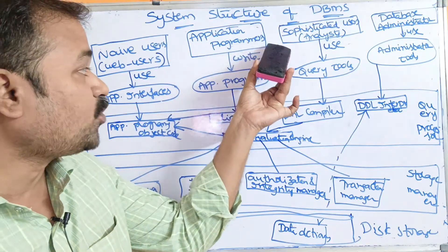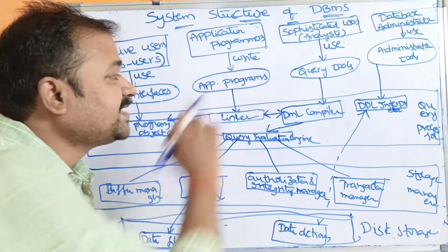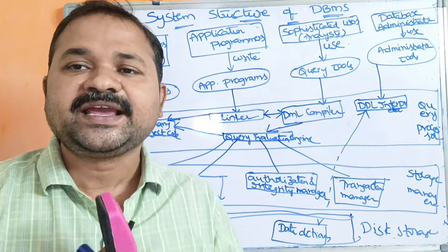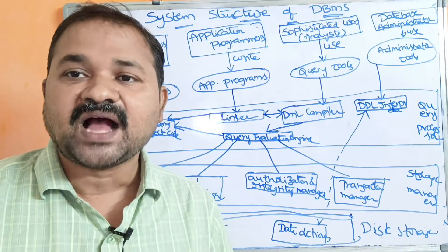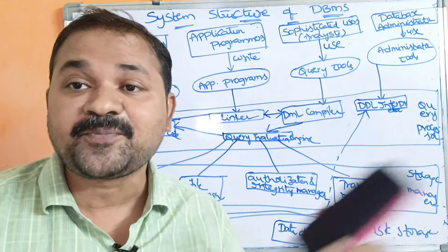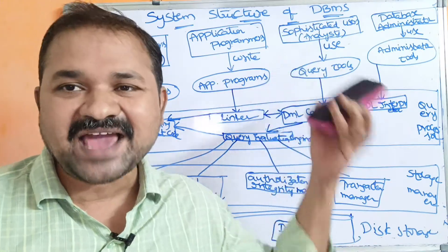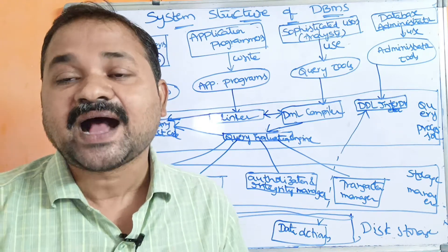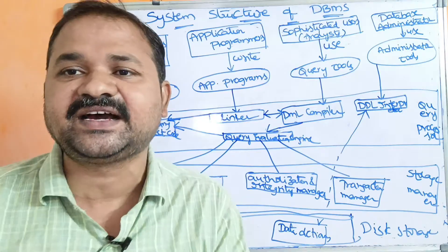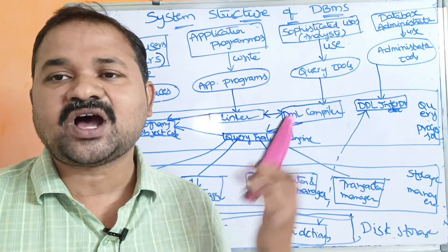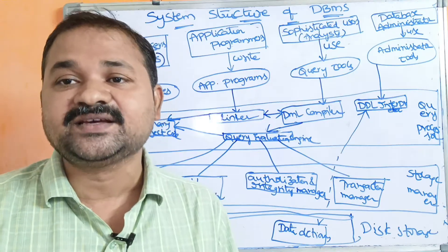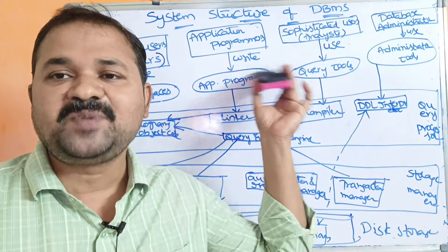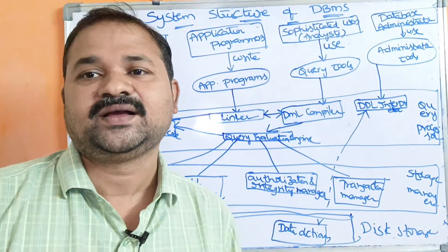Now let us see about application programmers. Application programmers write application programs in order to interact with the database. Application programmers are nothing but software employees. They use languages such as C, C++, C#, and Java in order to write application programs to interact with the database. If you take Java, Java employees use JDBC — Java Database Connectivity — in order to write the application programs.